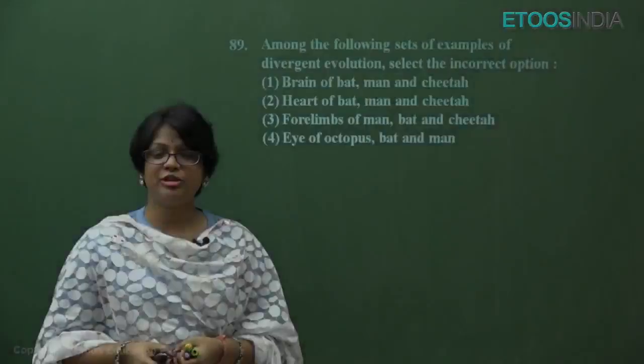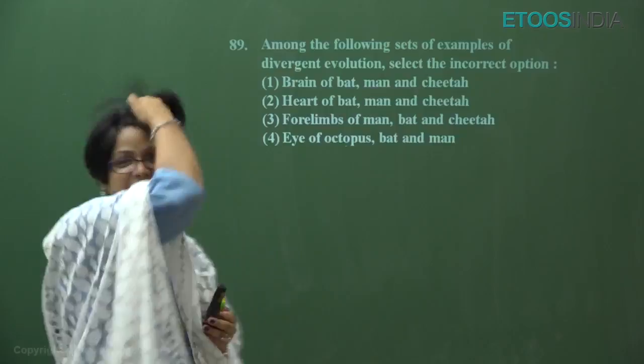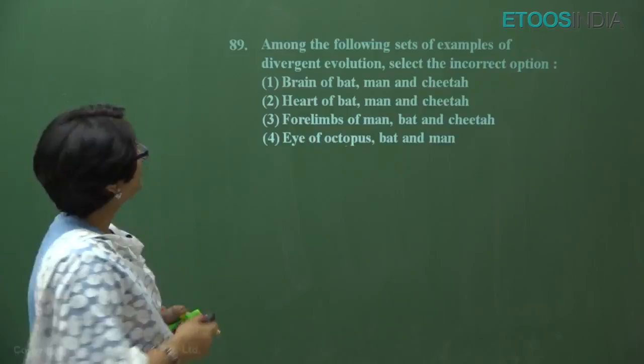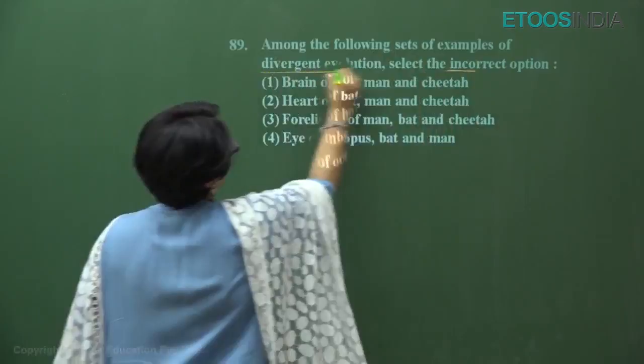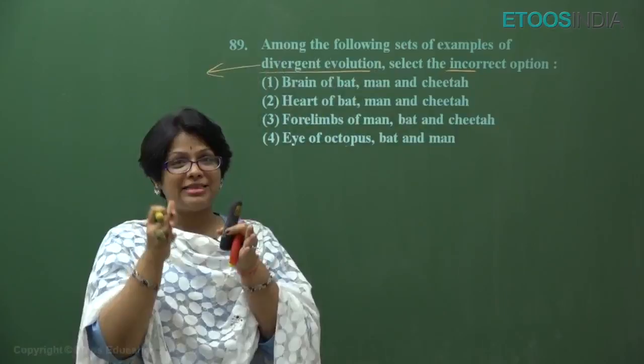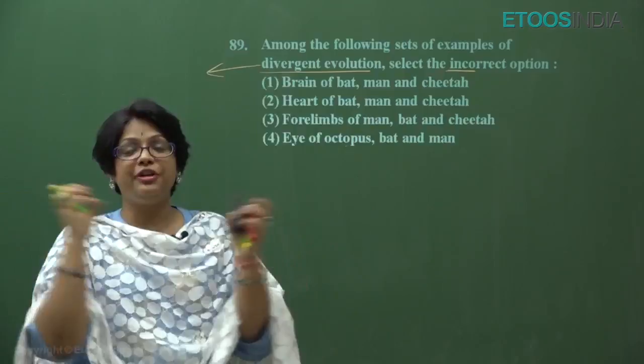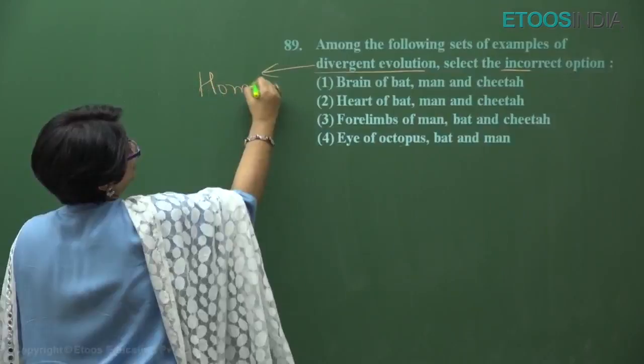The last question from the zoology part in RR code NEET 2018 is question number 89. Among the following, select the incorrect example of divergent evolution. We must be very careful — they are asking for the incorrect option. Divergent evolution means a common origin and common ancestor, then evolution into different organs performing different functions due to different habitats — these are homologous organ sets.